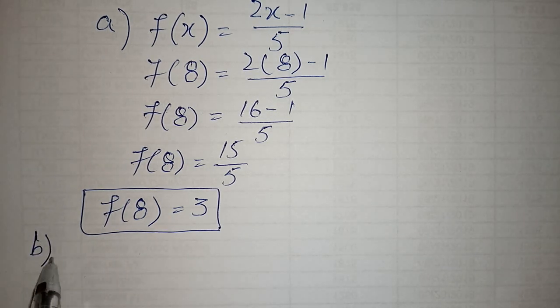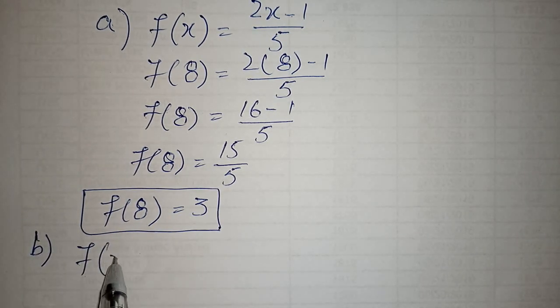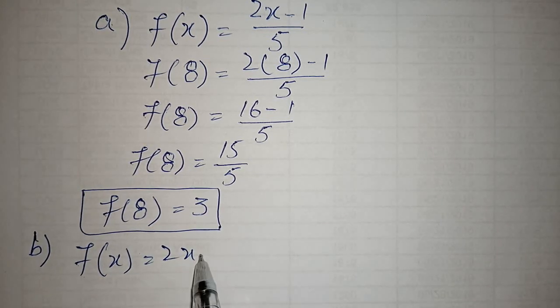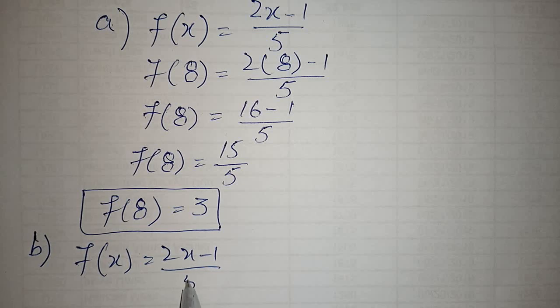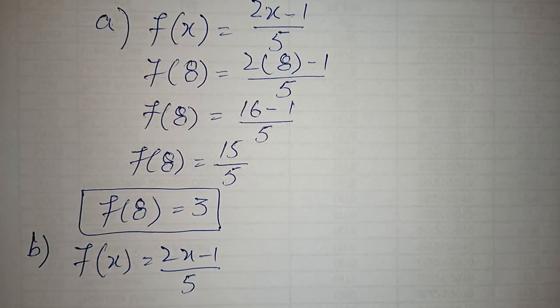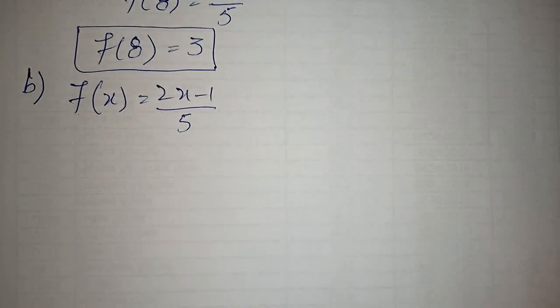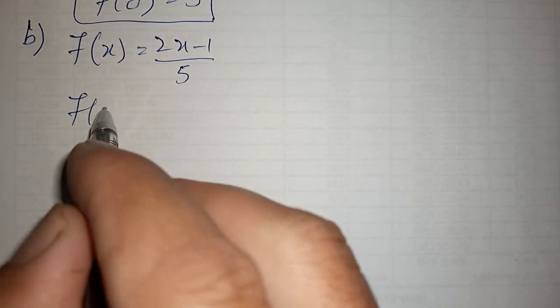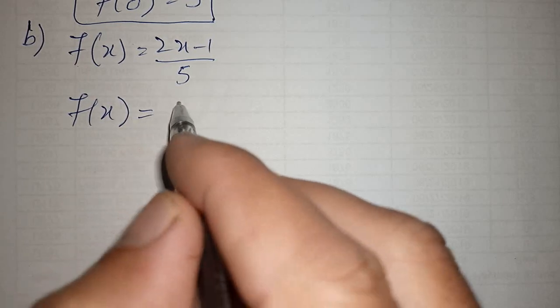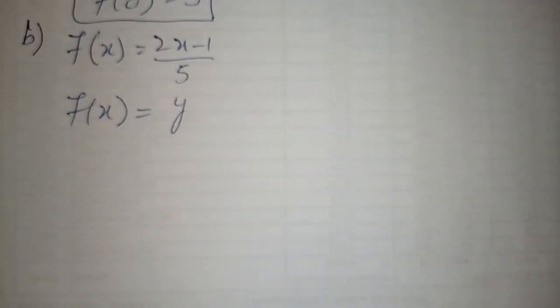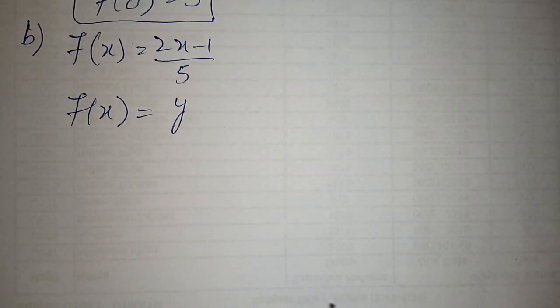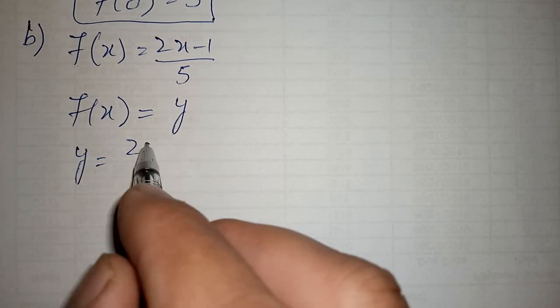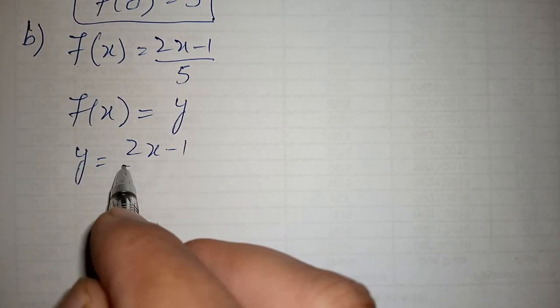Then part b. f(x) is equal to 2x minus 1 upon 5. Now we need the inverse function. First you will find its inverse. To find the inverse, f(x) is equal to, first you equate it to y. Then y is equal to 2x minus 1 upon 5.